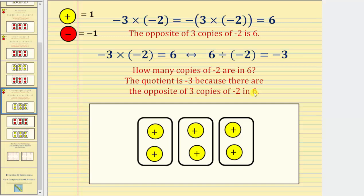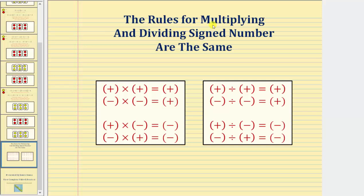Hopefully you found this lesson helpful in conceptualizing multiplication and division of integers. To conclude, the formal rules for multiplying and dividing integers are the same: when multiplying or dividing two integers with the same sign, the result is always positive; and when multiplying or dividing two integers with different signs, the result is always negative.